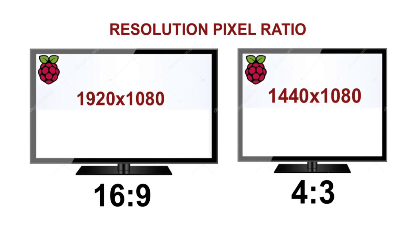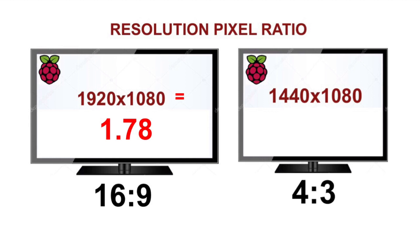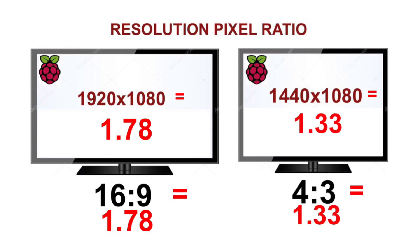To simplify the one-to-one ratio: if you take 1920 by 1080, the ratio is 1920 divided by 1080, which equals 1.78. And 16 divided by 9 also equals 1.78 — that's the one-to-one ratio, which gives you the best, truest image possible. For a 4 by 3, the resolution is 1440 by 1080, which equals 1.33. And 4 divided by 3 also equals 1.33 — again the one-to-one ratio, which keeps the picture clean, crisp, and not skewed.